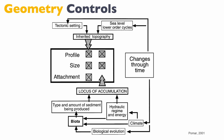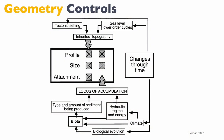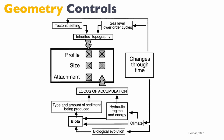Let's start with the inherited topography. The inherited topography can impact both the profile of the buildup, the size of the buildup, and whether or not the buildup is attached. Whether or not the buildup is attached is only controlled by the inherited topography. The inherited topography is controlled by two factors: the tectonic setting — the tectonic history of the area in which the carbonates grow — and the lower order of sea level cycles. Inherited topography also impacts profile and size.